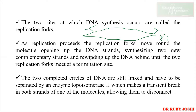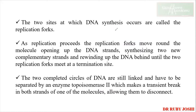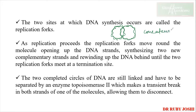As replication proceeds, the replication forks move around the molecule, opening DNA strands, synthesizing new strands, and finally at the termination site the two forks meet and replication stops. The two completed copies of DNA are still linked and have to be separated by the enzyme topoisomerase 2, which makes transient breaks in both strands of the molecules, allowing them to disconnect. These linked molecules are also called catenanes.